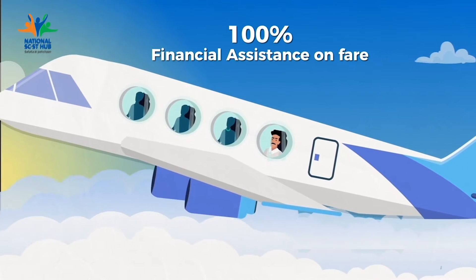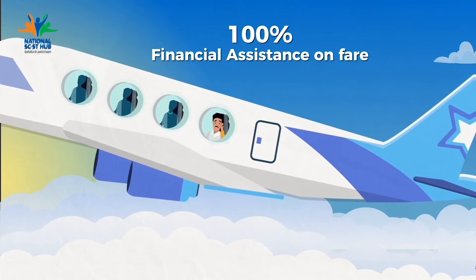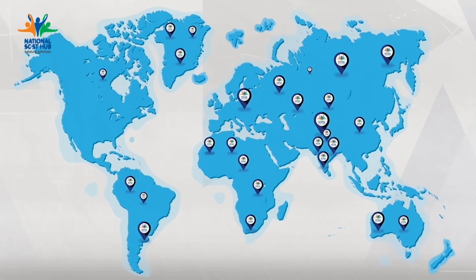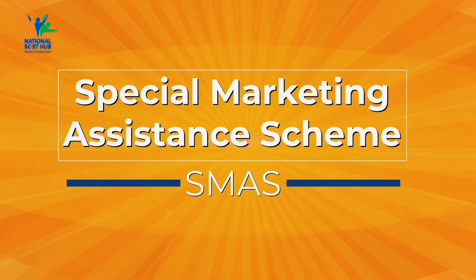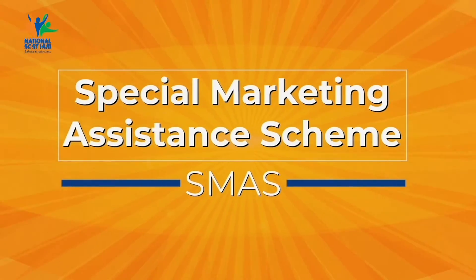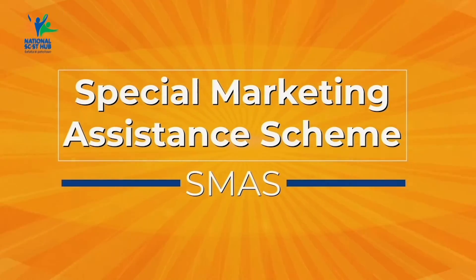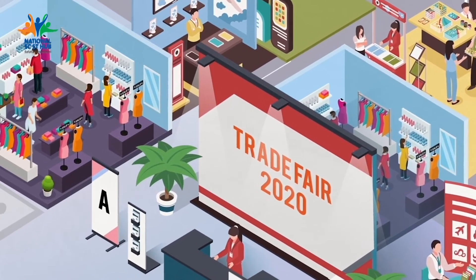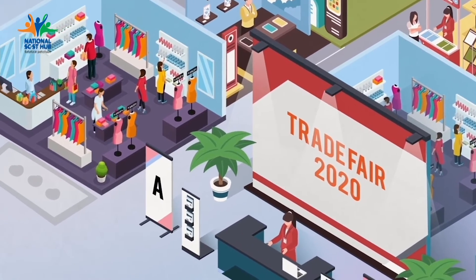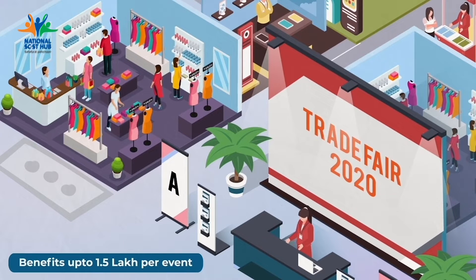The domestic and international activation subsidy is 2.5%. The SMAS-ACST entrepreneur scheme covers marketing through trade fairs and activations. Domestic activation and trade fairs are also available under the SESD interface, which provides support up to 10,00,000 rupees.